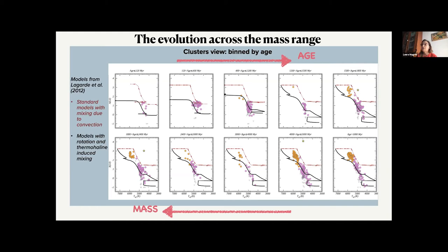And we have compared with models of Nadege and Corinne. And the two models we are comparing to are the standard model, the red one, and the model with only convection, and the models with rotation and thermohaline induced mixing. So you can see the data show clearly that the model with only convection are not able to reproduce the evolution of lithium in any of the mass or age range.